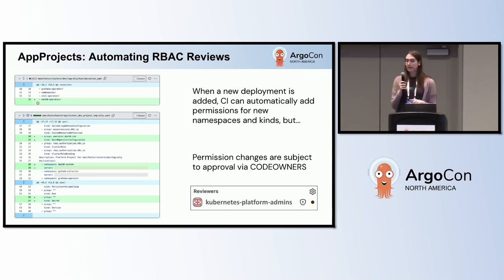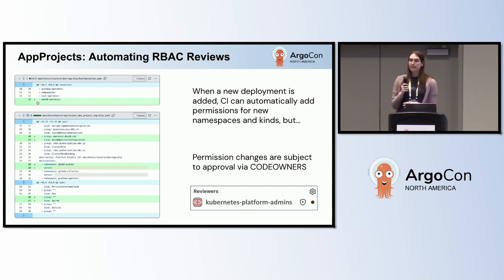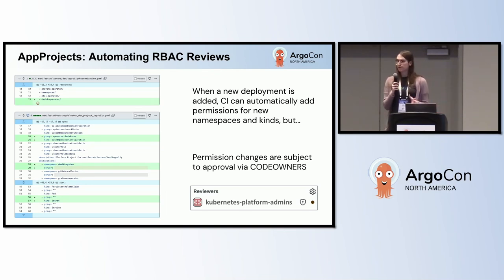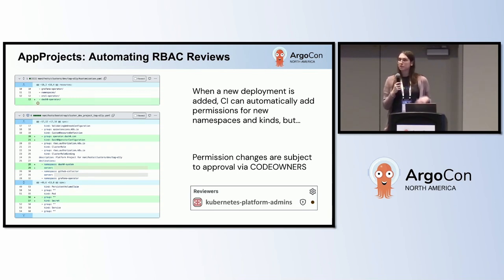The real trick here is a very logical code owner setup. By making an app team code owners of their own manifests, but making a platform admin team code owners of the app projects living in the same repo, you can use CI to automatically generate the app project changes and just attach them to PRs.